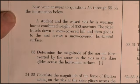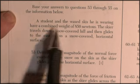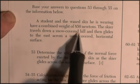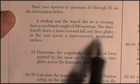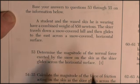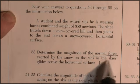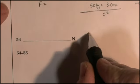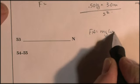Okay, question 53 through 55 is based on a student and the wax skis he's wearing have a combined weight of 850 newtons. The skier travels down a snow-covered hill and then glides to the east across a snow-covered horizontal surface. Determine the magnitude of the normal force exerted by the snow on the skis as the skier glides across the horizontal surface. Well, this is pretty easy.